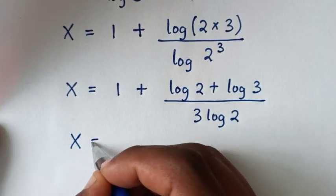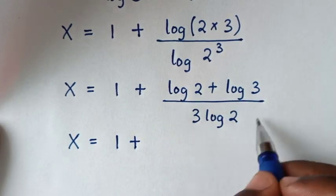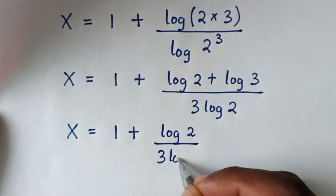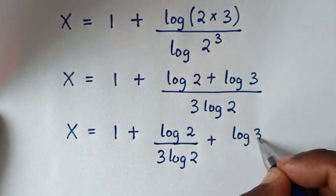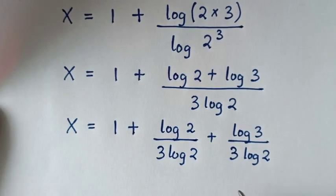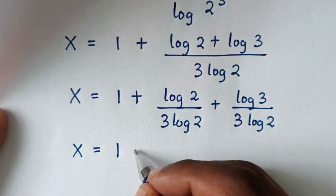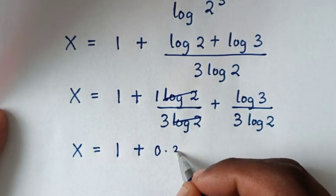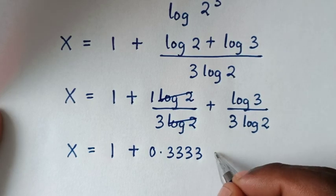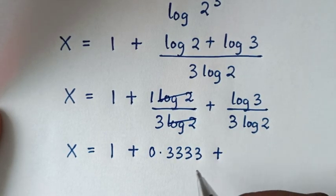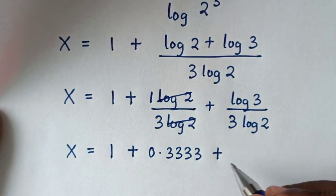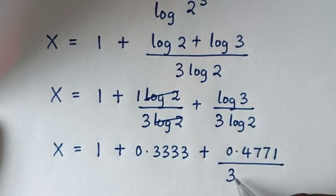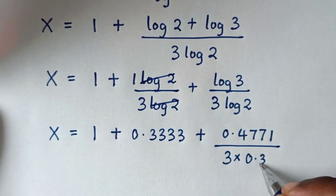So x is equal to 1 plus log 2 plus log 3, all over 3 times log 2. Now 1 over 3 gives 0.3333 recurring, so we put it to 4 decimal places as 1.3333. Then log of 3 is 0.4771, and log of 2 is 0.301.